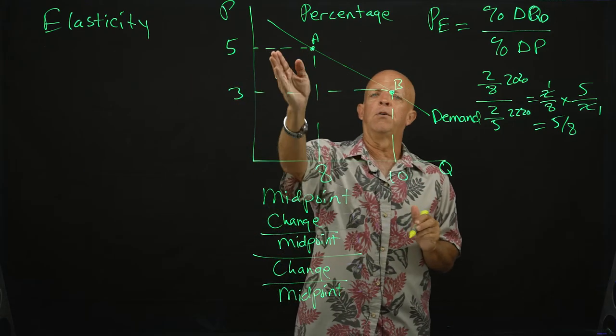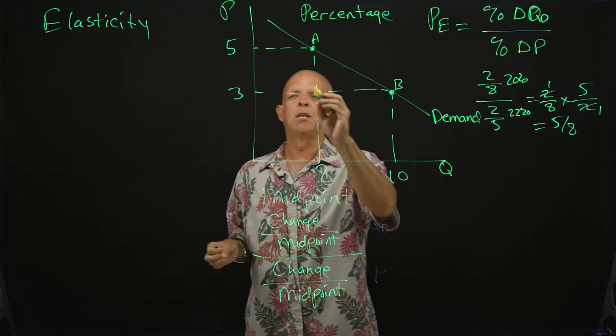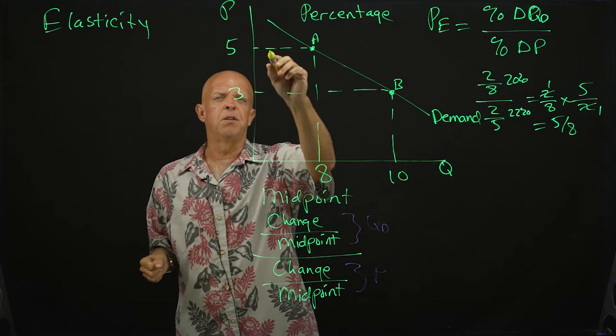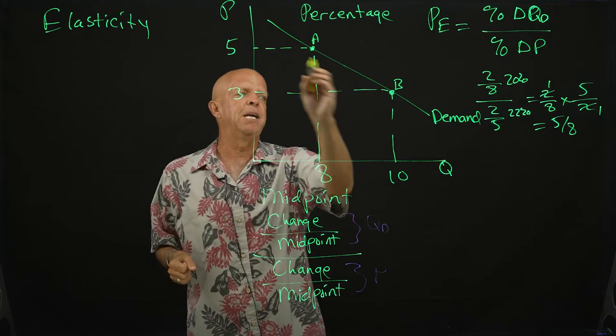Now that's all well and good as we're going from A to B, but what about the other way, increasing the price from three to five? So from B to A.